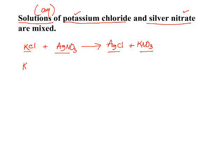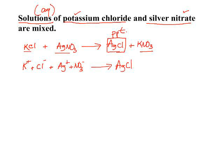If we write our complete ionic equation, we take our substances and write them as they would exist in solution. Since potassium chloride is soluble, it would contain the potassium and the chloride ions. Silver nitrate would contain the silver and nitrate ions. On the right, our precipitate silver chloride would not be written in ion form because it is insoluble. Potassium nitrate, being soluble, would be written in ion form. That's your complete ionic equation.